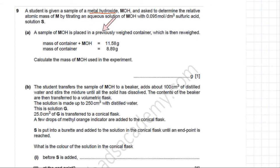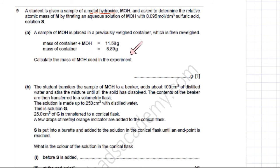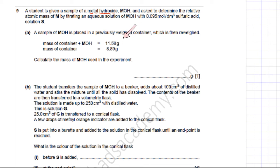A sample of MOH is placed in a previously weighed container, which is then re-weighed. The mass of container plus MOH is 11.58 grams. We need to calculate the mass of MOH used in the experiment by subtracting the mass of the container from 11.58 grams, giving us 2.69 grams of MOH.